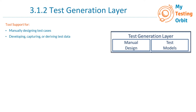The second point is developing, capturing, or deriving test data. Test data is a very important part of test generation when we are writing test cases. When we have different scenarios to execute, it's very important that we have the right test data. We can develop or create data for a new project or derive it from a data source like a production environment.